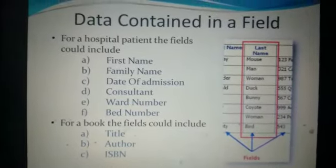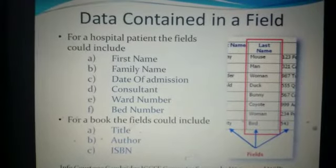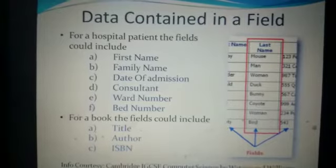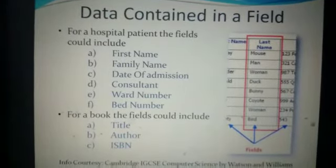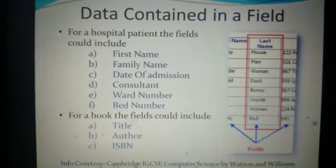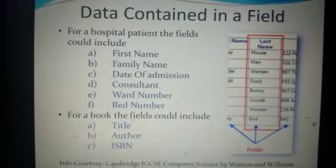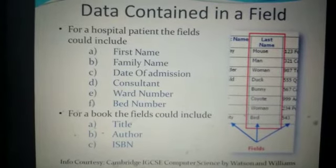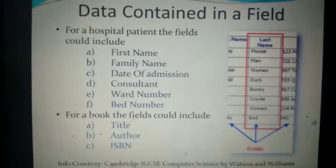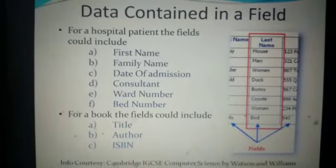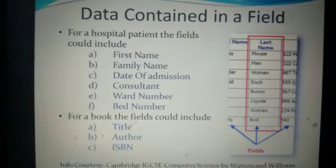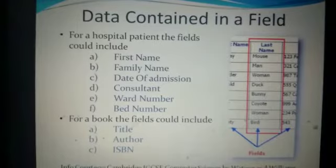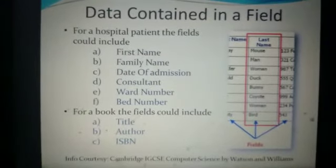Now let me tell you about examples of the types of data that can be contained in a field. It might contain the first names, the family name, the date of admission, consultant name, the ward number, the bed number. Or one field might contain the title of a book, the author's name, or the ISBNs of books.